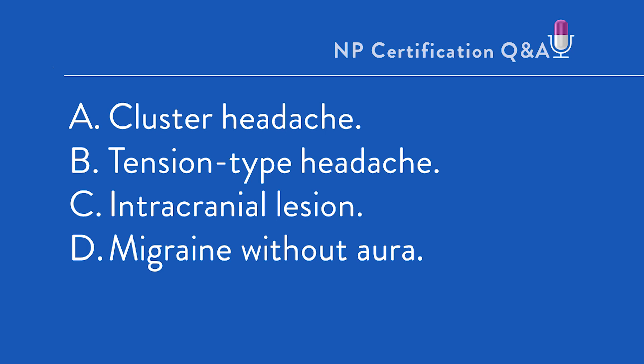Answer C, intracranial lesion. A headache associated with an intracranial lesion would be considered a secondary headache — with an identifiable underlying cause. A number of points in this scenario lean us away from a secondary headache diagnosis: the length of time the patient has had this headache — more than 15 years — the fact that she has had the same headache over and over again, and the normal neuro exam. While headache is not commonly reported with intracranial lesion, this secondary headache type is most often found at either end of the lifespan — under five-year-olds and over 60-year-olds. This is not the correct answer.